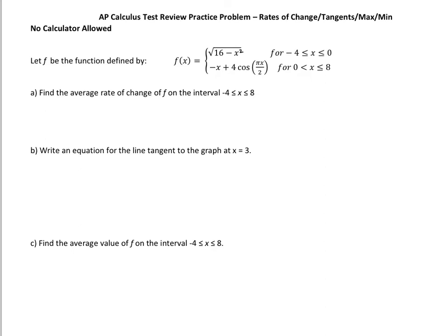Okay, we have a function here. It says let f be the function defined by, and it's piecewise: square root of 16 minus x squared for x between negative 4 and 0, and negative x plus 4 cosine pi x over 2 when x is between 0 and 8. And we have to first find the average rate of change of f on the interval.